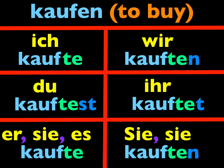Repeat all of these forms after me: ich kaufte, du kauftest, er kaufte, wir kauften, ihr kauftet, sie kauften.